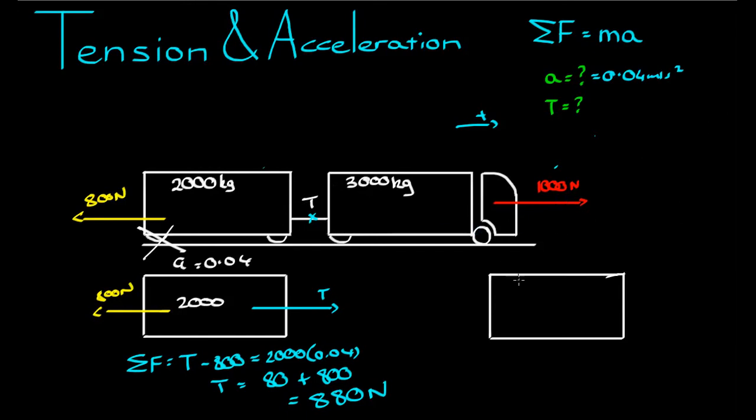So the front object, the front load, has a mass of 3000 kilograms, it has a tension force going that way, and it has a driving force going that way, so 1000, and then the mystery. And it also has an acceleration of 0.04 in this case. So the sum of the forces is equal to ma, the sum of the forces being 1000 take away T equals 3000 times 0.04.